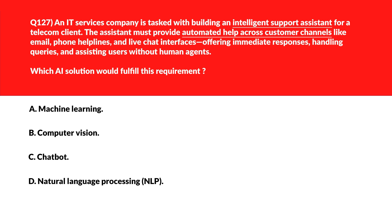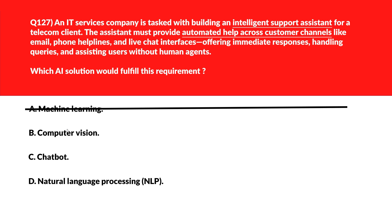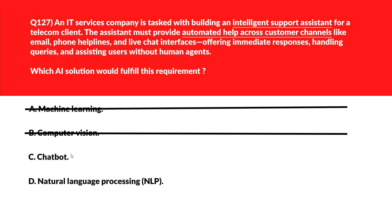Let's look at this question about an intelligent support assistant. Option A is Machine Learning — machine learning enables general model training but doesn't operate as a direct user interface for customer queries, so it's incorrect. Option B is Computer Vision — computer vision focuses on image data, which is not related to support across email, phone, or live chat — wrong choice.